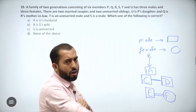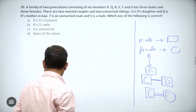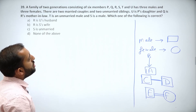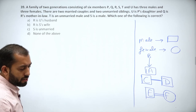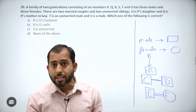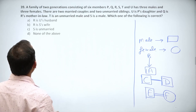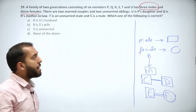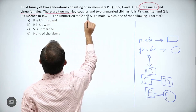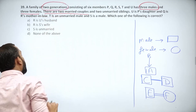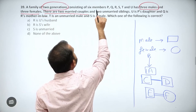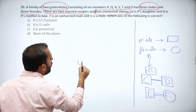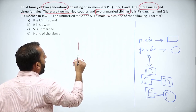Now the problem: a family of two generations consisting of six members P, Q, R, S, T, U has three males and three females. There are two married couples and two unmarried siblings. U is P's daughter, so I will join P and U with a downward arrow.